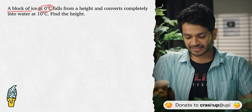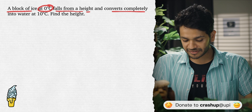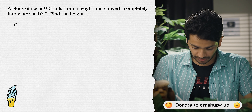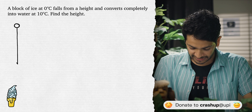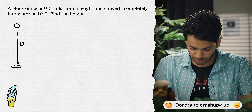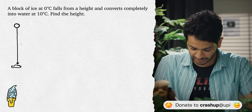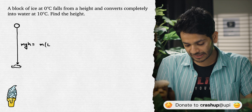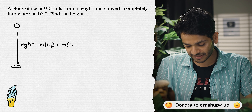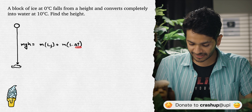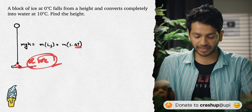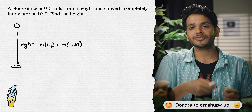Now a variant: ice falls from height, lands, melts completely, and the resulting water further warms to 10°C. So Q = MGH = M × Lf + M × S × ∆T, where ∆T goes from 0°C to 10°C. Pause the video and solve.